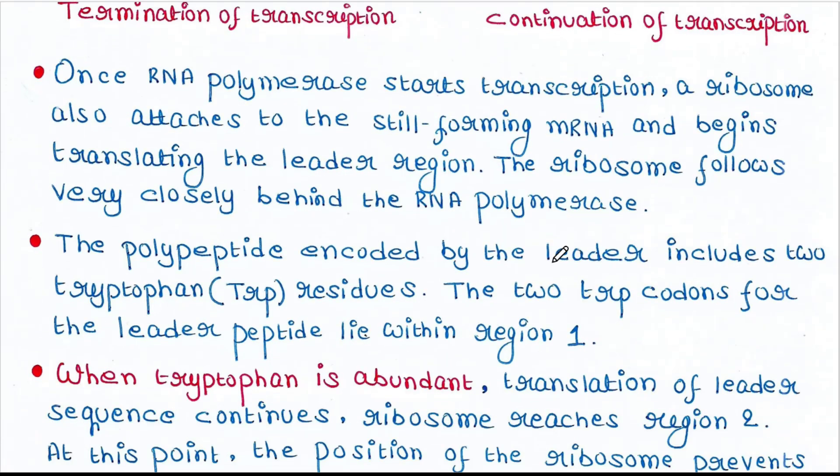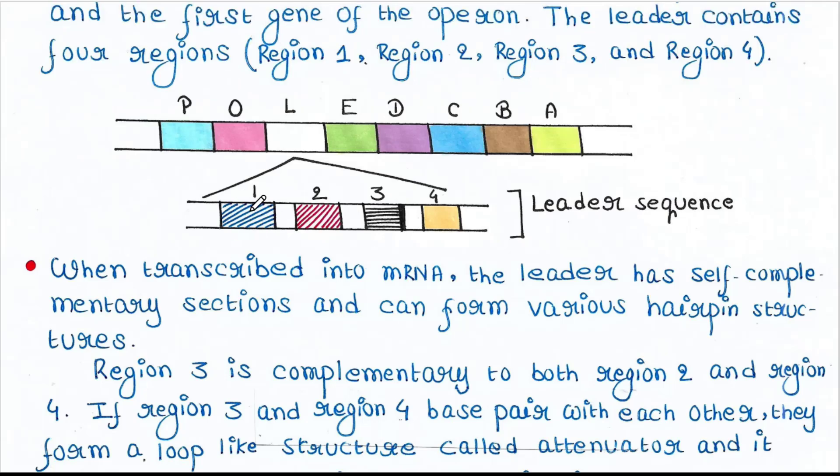Once RNA polymerase starts transcription, a ribosome also attaches to the still-forming mRNA and begins translating the leader region. The ribosome follows very closely behind RNA polymerase. This is the unique feature of prokaryotes where transcription and translation occur together, unlike in eukaryotes. The polypeptide encoded by the leader includes two tryptophan residues, and these two tryptophan codons lie within region 1.